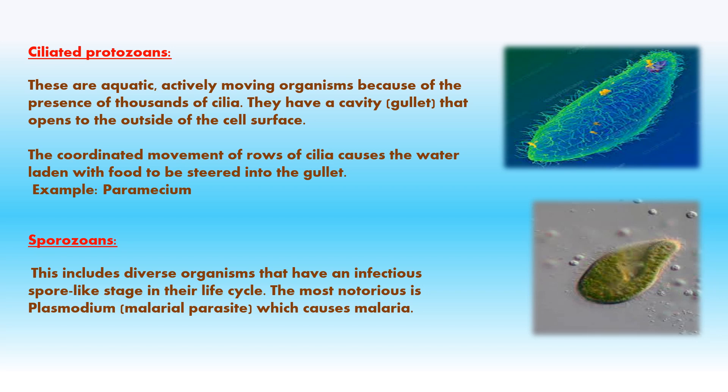Sporozoans are a group of mainly parasitic protozoans. They have a simple structure because of their parasitic mode of life and have an infectious spore-like stage in their life cycle. Example: Plasmodium (the malarial parasite) causes malaria in humans.